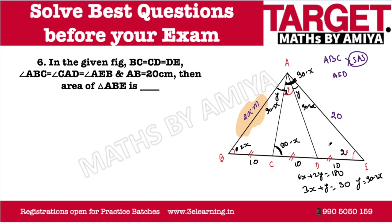So this is a configuration of many isosceles triangles. We now have sides 20, 20, and 30. If you have any doubt, please pause and revise. This is one of the best and most classical questions in geometry. We can draw a perpendicular and use the isosceles triangle property, the direct formula, or Heron's formula.